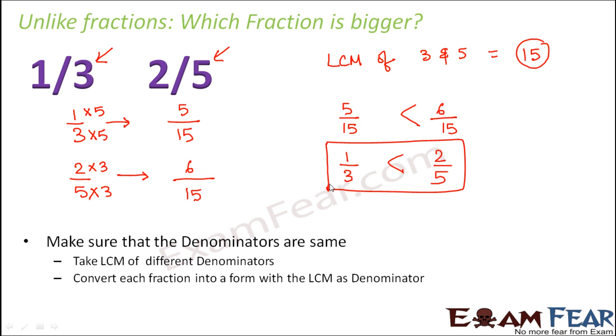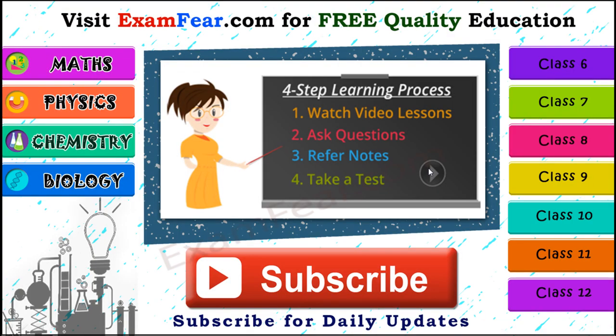So in this case also the concept is not difficult, but it is just that you need to convert both the fractions into equivalent fractions such that the two equivalent fractions are like fractions. So now it has become simple. Once you have converted it into like fractions then your job gets simpler.